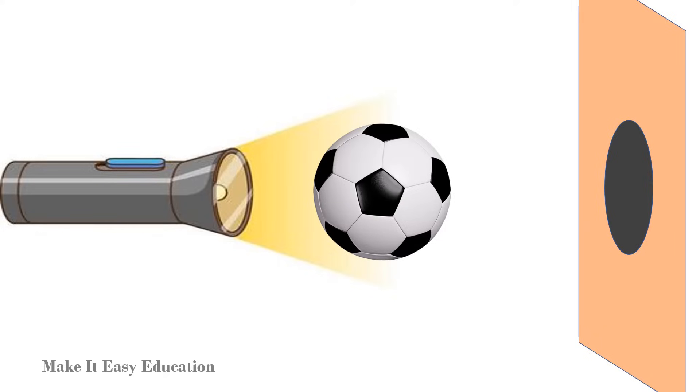In this example, the torch is the source of light, and the ball is the opaque object. The shadow of the ball is formed on the screen.